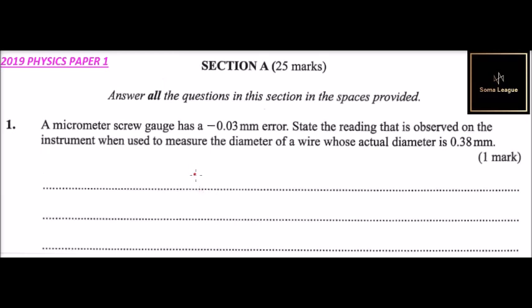A micrometer screw gauge has a -0.03 millimeter error. State the reading that is observed on the instrument when used to measure the diameter of a wire whose actual diameter is 0.38 millimeters. This is one mark.